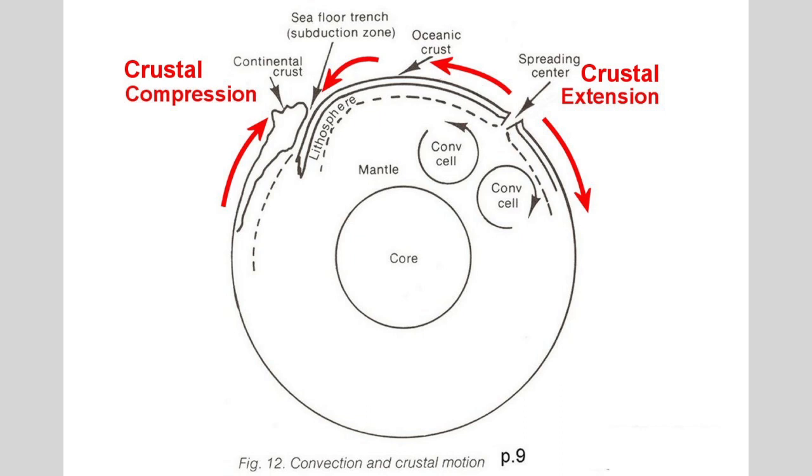Since we're stretching the crust of the earth and adding more material to it, that means that the earth is getting larger — and we know that's not the case. So we have to look at places where material from the outermost layer of the earth is being pushed back down into the subsurface, back into the mantle, such that we can maintain the constant volume of the earth.